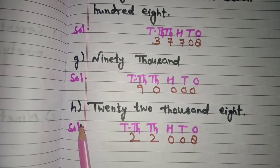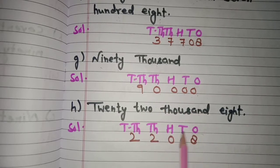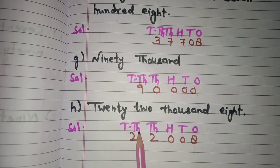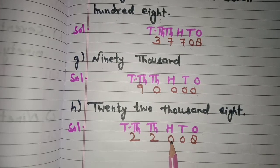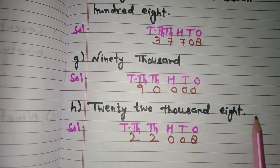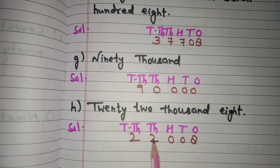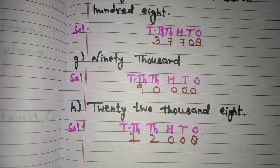Next is the last part, part h: 22,008. 22,000 means places written up to ten thousands. Then 2 at ten thousands and 2 at thousands. At hundreds and tens we write 0, and 8 is written at ones place because it is a single digit. So 22,008 is the figure for twenty-two thousand and eight. I hope you all would have understood this exercise and now you will be able to write the figures and numbers.